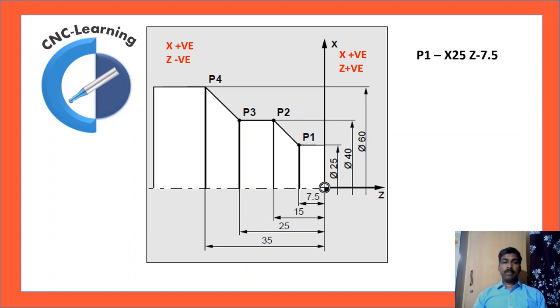So P1 is X25, Z minus 7.5. So you can see in the figure, the diameter for the first step is diameter of 25 and length is 7.5. So the coordinate for P1 is X25, Z minus 7.5. P2 is X40, Z minus 15. P3 is same diameter X40, Z minus 25. P4 is X60, Z minus 34.